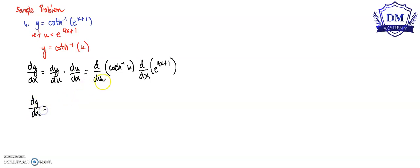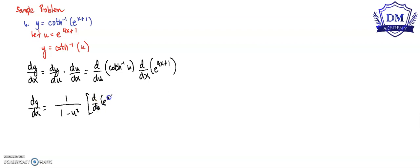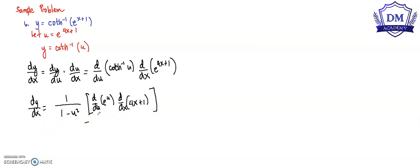The derivative of inverse hyperbolic cotangent of u is 1 all over 1 minus u squared, multiplied by d over du of e raised to u, and we use another chain rule: times d over dx of x plus 1. Let's simplify.